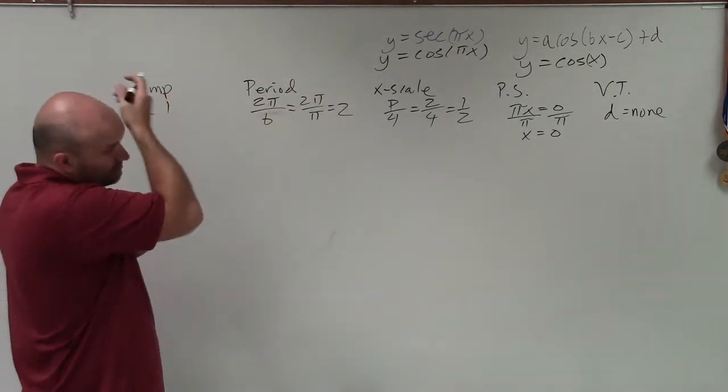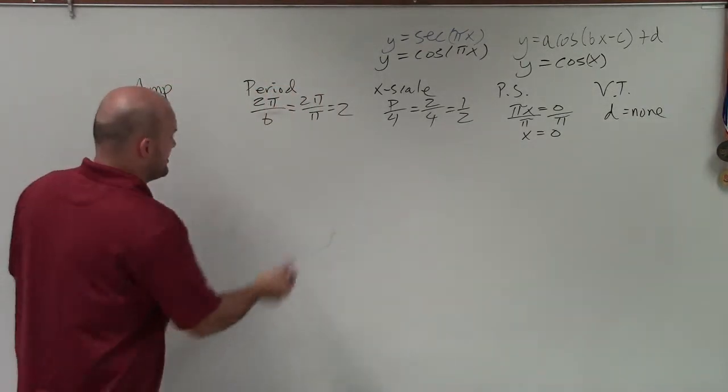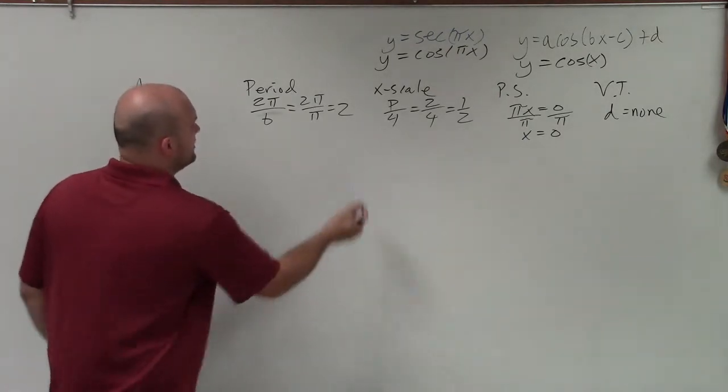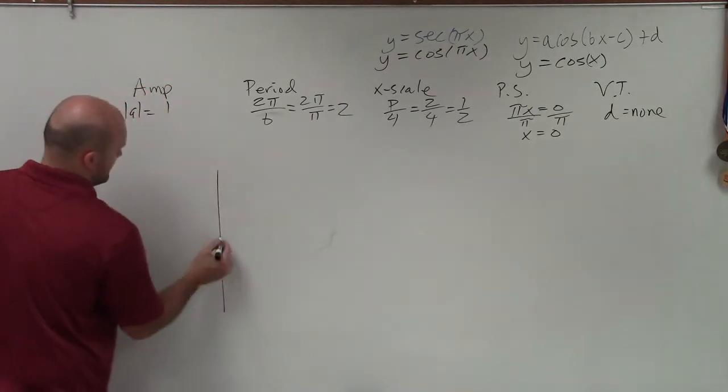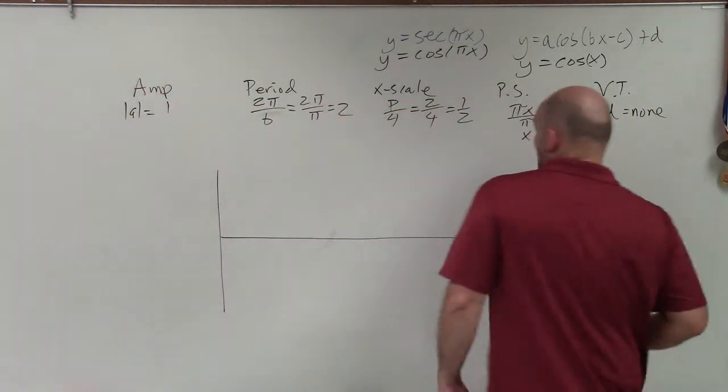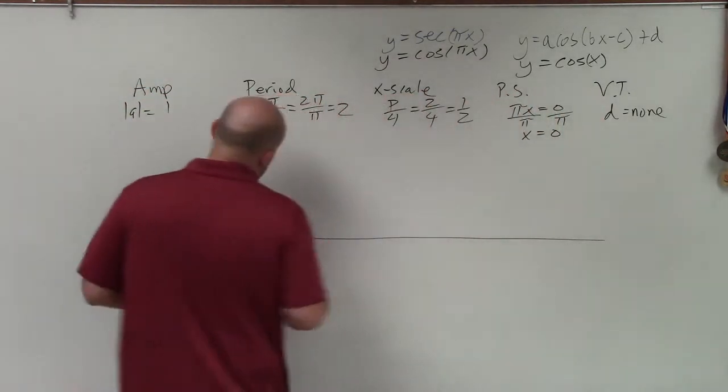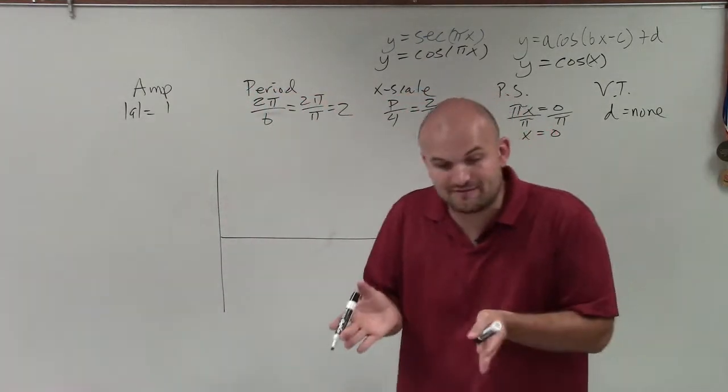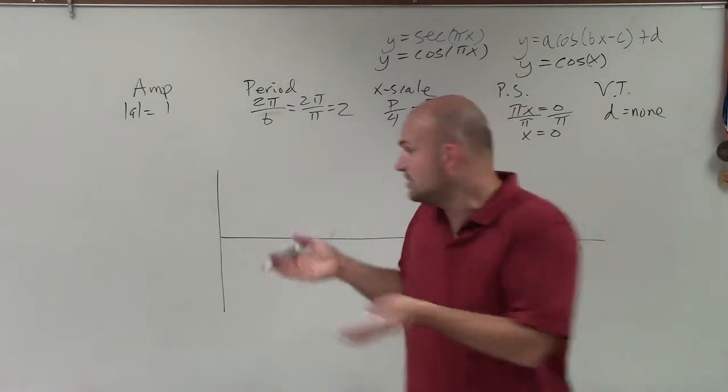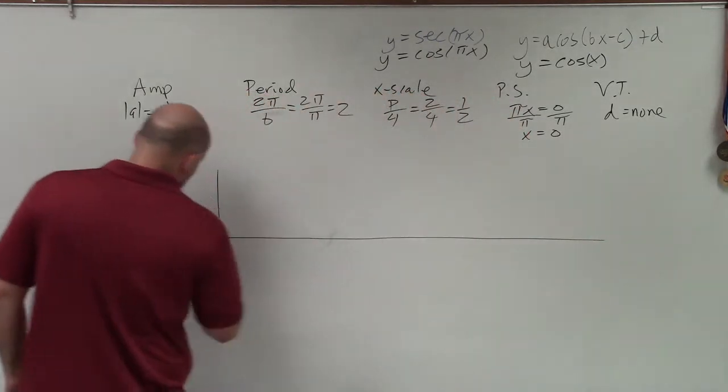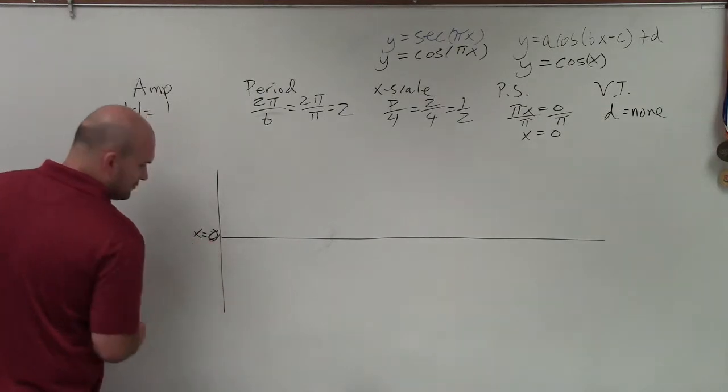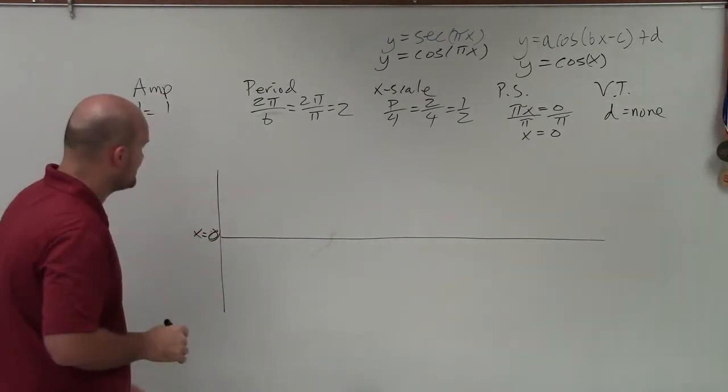All right. So basically, ladies and gentlemen, we want to graph this. Let's see, two periods to the right, two periods to the left. Let's do two periods to the right. OK. When you're getting the graph, what I always like to do is start at your phase shift. Where are you going to start? Where is the phase shift to left to right, or is it at 0? Since I'm starting at 0, I'm going to start at when x is equal to 0, right here. We're not going to do any negatives in this case.